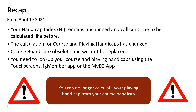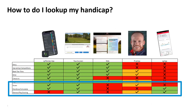Looking at the different technologies available: across the top you've got the app, the touch screen, the web, the pro shop, and the myEG app. For looking up your handicaps, you can do it through the app or the touch screen. You can't really do this via the web. The myEG app covers some of it. The pro shop will help you, but really they'll show you how to use the technology — they don't have any extra tools to look this up.